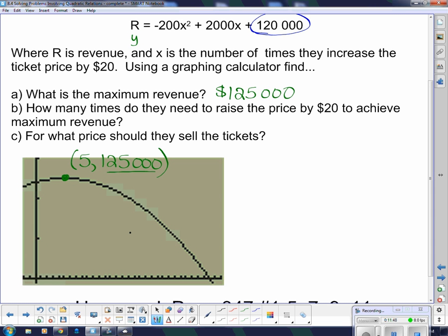How many times do they need to raise the price by $20 to achieve the maximum revenue? That's this other thing here because the x along the bottom was every time that they raised the price. So, it's 5. They need to do it 5 times. And, of course, if you raise the price by $20 5 times, 5 times $20 is $100. So, they need to raise the price by $100.